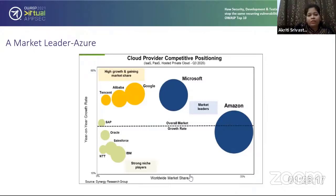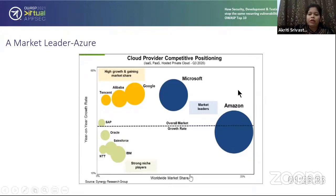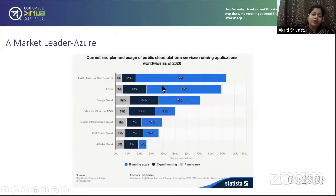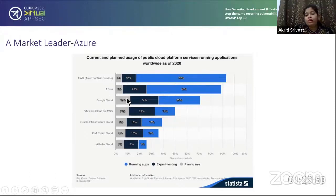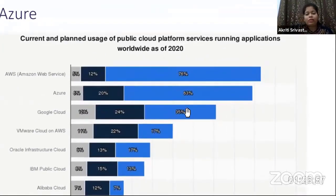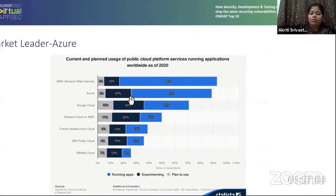Starting with the first point: Azure is a market leader, and we can see proof in this chart showing worldwide market share. Microsoft and Amazon are the biggest players — Microsoft holds about 18 percent of worldwide market share. Azure is growing enormously, competing with AWS and Google Cloud. Current usage is 63 percent, planned is 6 percent, and experimenting is 20 percent. This is big proof that Azure is gaining a big boom in the cloud service provider market.